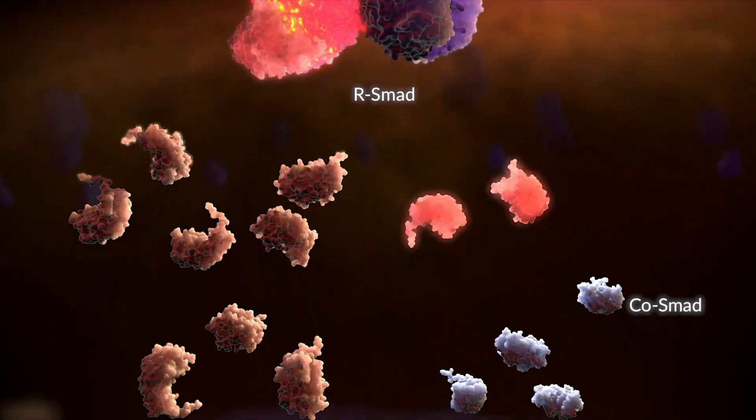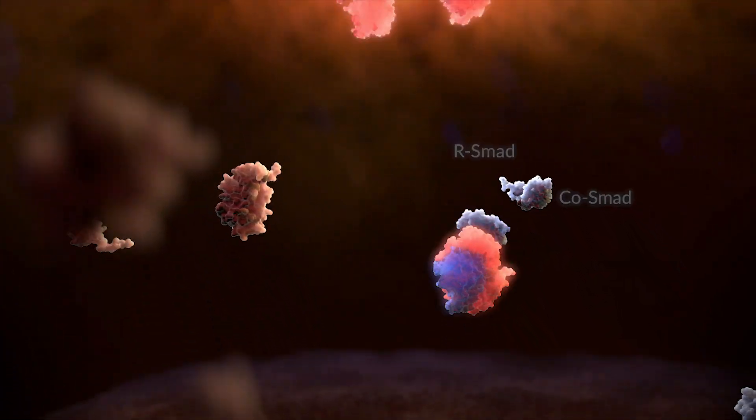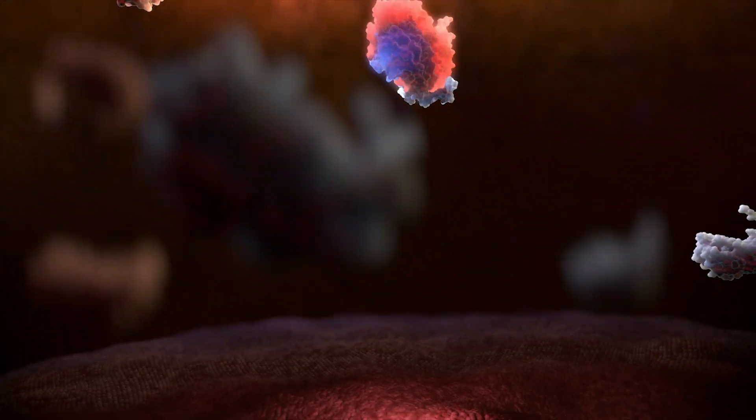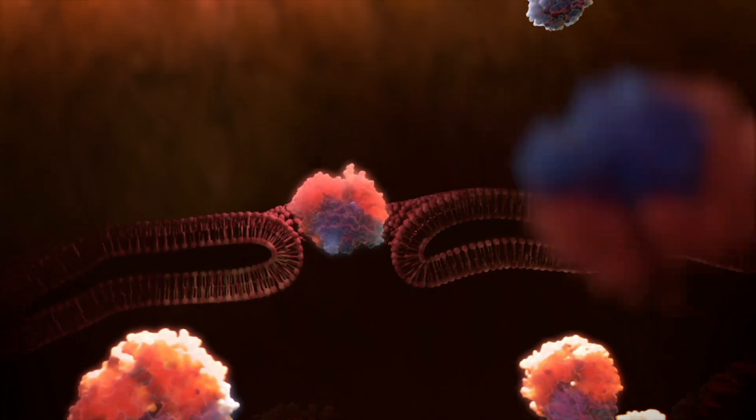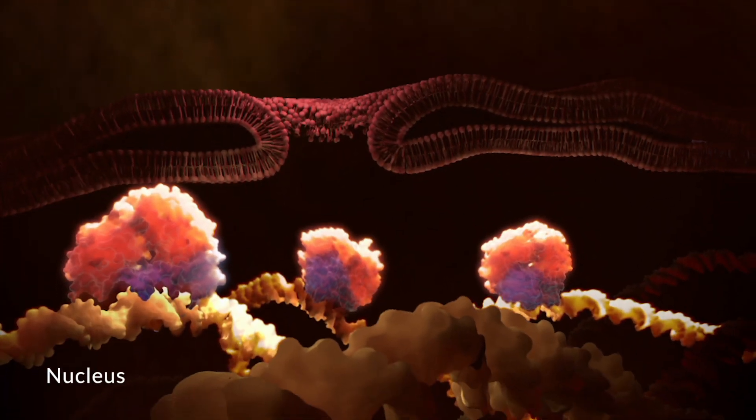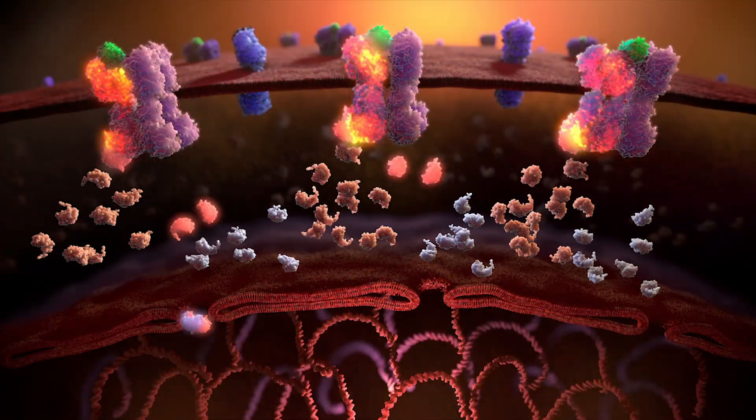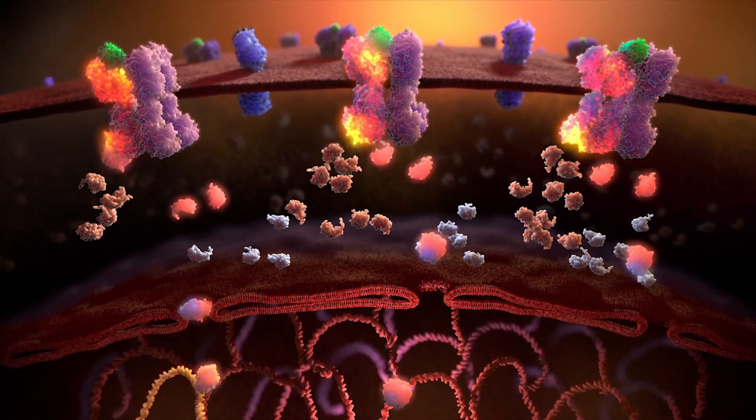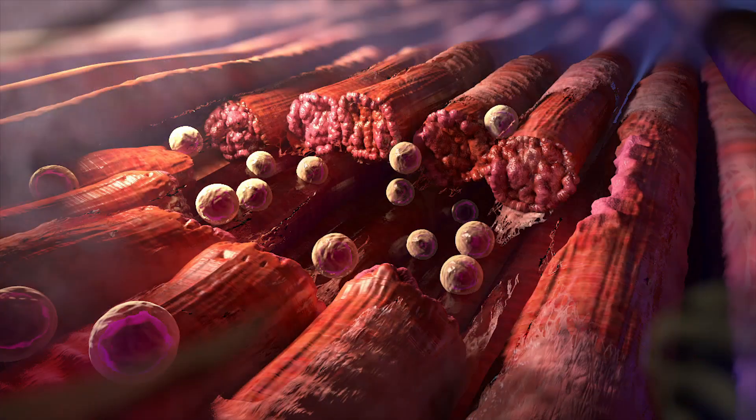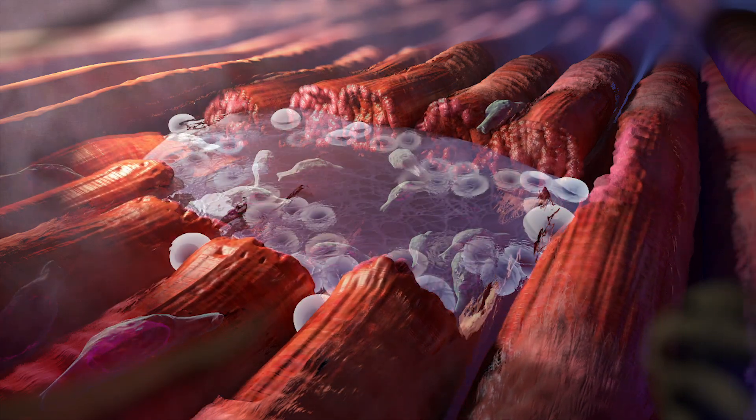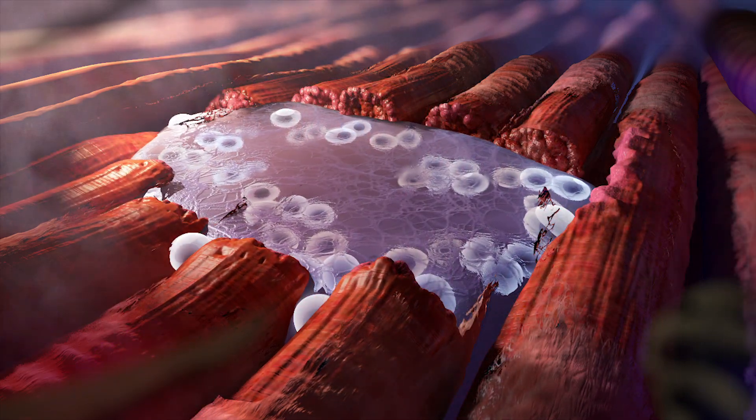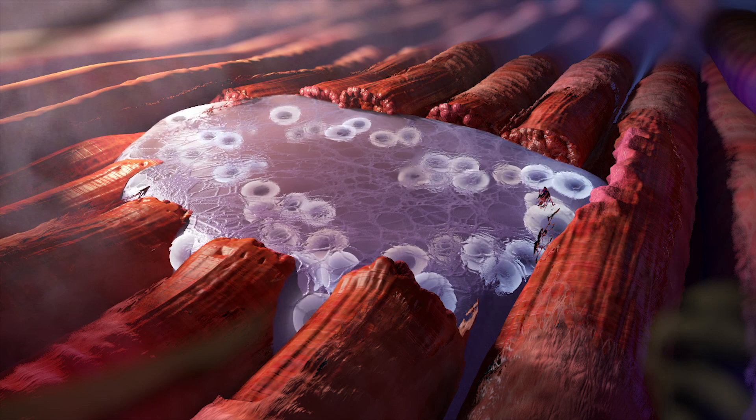Intracellular protein messengers called SMADs are activated by the addition of a phosphate group and then form complexes that deliver the excessive BMP signaling to the cell's nucleus. The activated SMADs regulate gene expression so that the recruited stem cells are misdirected to differentiate into cartilage. The cartilage is then replaced by heterotopic bone.